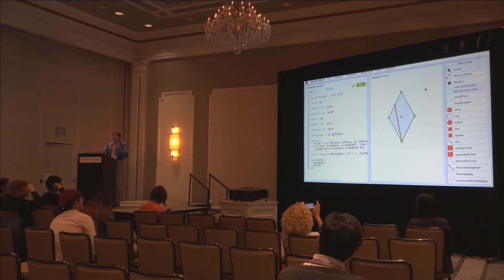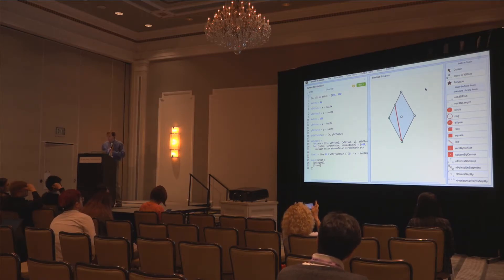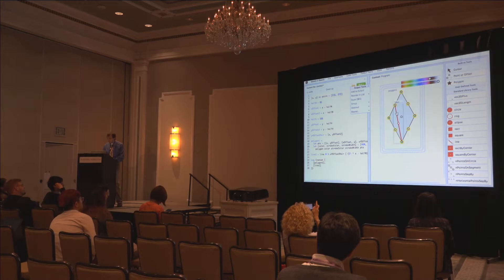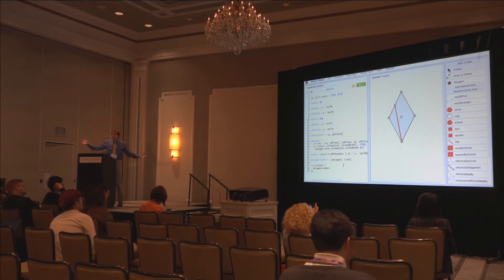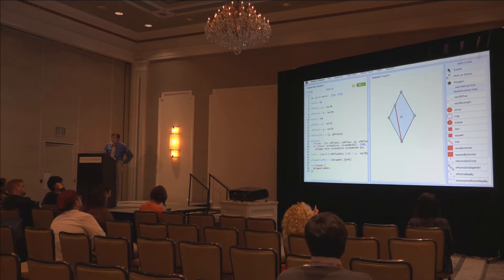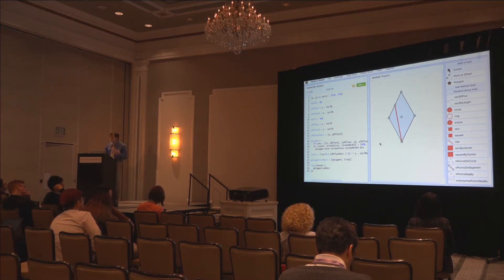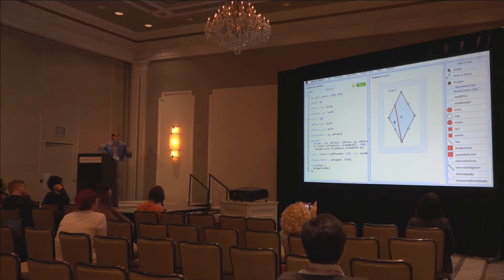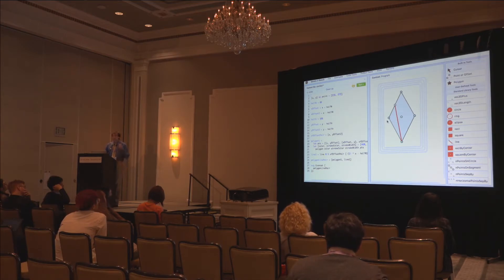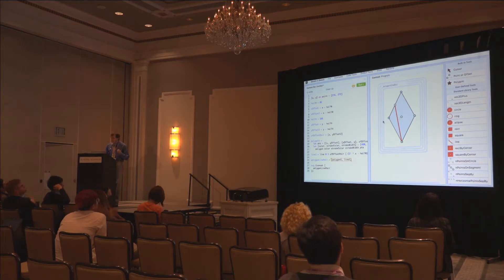At this point we want to take these two shapes — the rhombus and the line — and put them together into a group, like in a standard graphics editor. But we want to embrace generic programming concepts. So rather than an SVG-specific group concept, if we select the rhombus and the line and ask Sketch-and-Sketch to group them, all it does is put them in a list. We're in a programming language — groups are lists. These dotted borders are list widgets emitted anytime the evaluator sees a list, allowing us to select lists in our program.